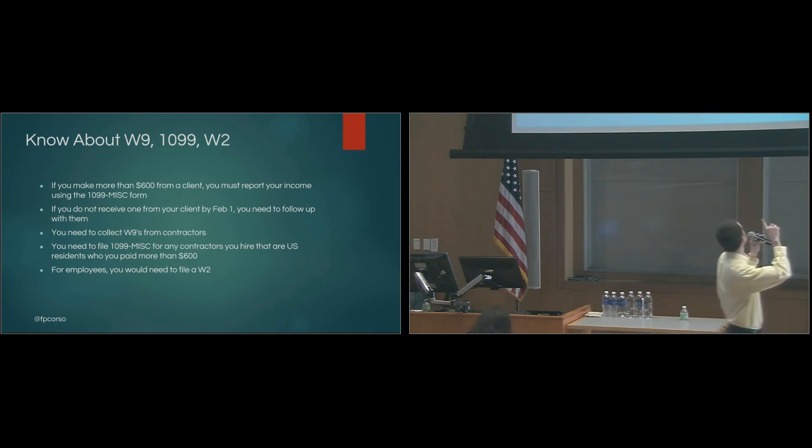And the W2, for employees, you would issue out W2s, and then contractors would be 1099s. But essentially, those two forms are the same thing. They're just pretty much saying how much you've paid them or how much someone's paid you if you're an employee or a contractor.